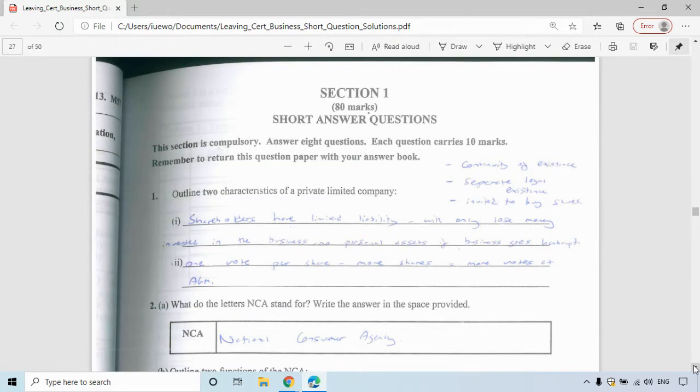Private limited companies have continuity of existence, which means that if a member or shareholder dies, the business keeps going in separate legal existence. You must be invited to buy shares in a private limited company as well. The person who owns the business must invite you in, whereas public limited companies are on the stock market.